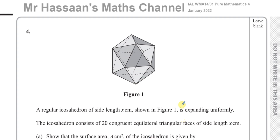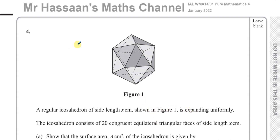Welcome back, this is Mr. Hassan's Maths channel. I'm now on question number four from the P4 Pure Mathematics P4 International A-level LXL January 2022 exam. Here is a regular icosahedron of side length x centimetres, shown in figure one, and it is expanding uniformly.